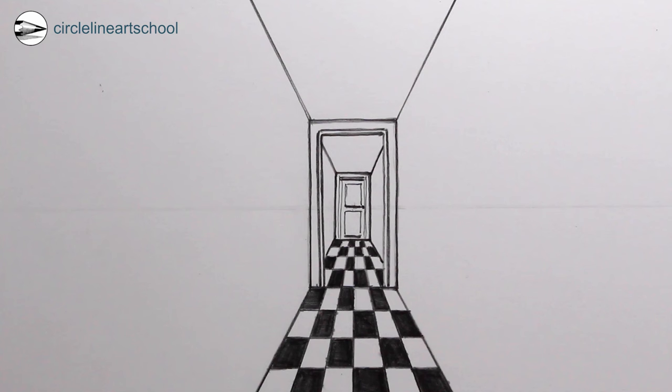Once you've done this you could perhaps shade in some of the tiles to make a checkered pattern.